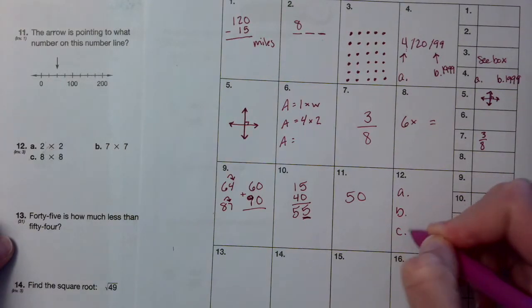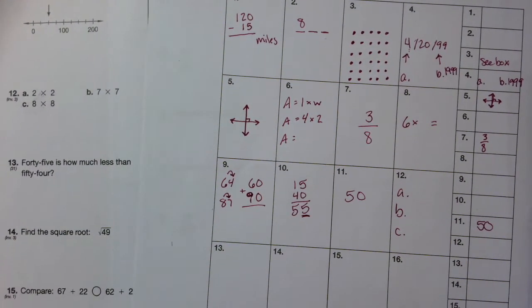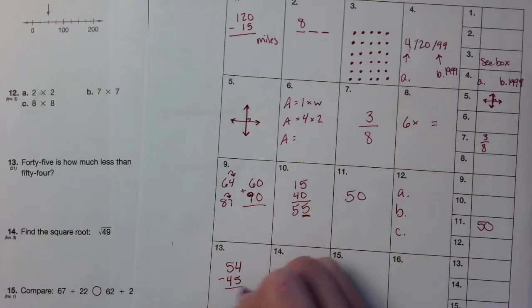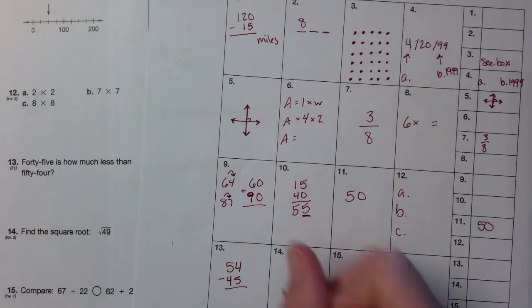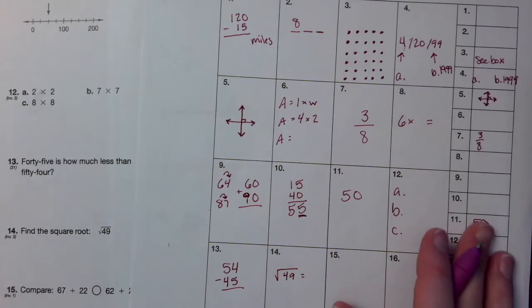12, go ahead and find the answer to those addition problems, or multiplication problems. 13 says 45 is how much less than 54. So you've got to do 54 minus 45.